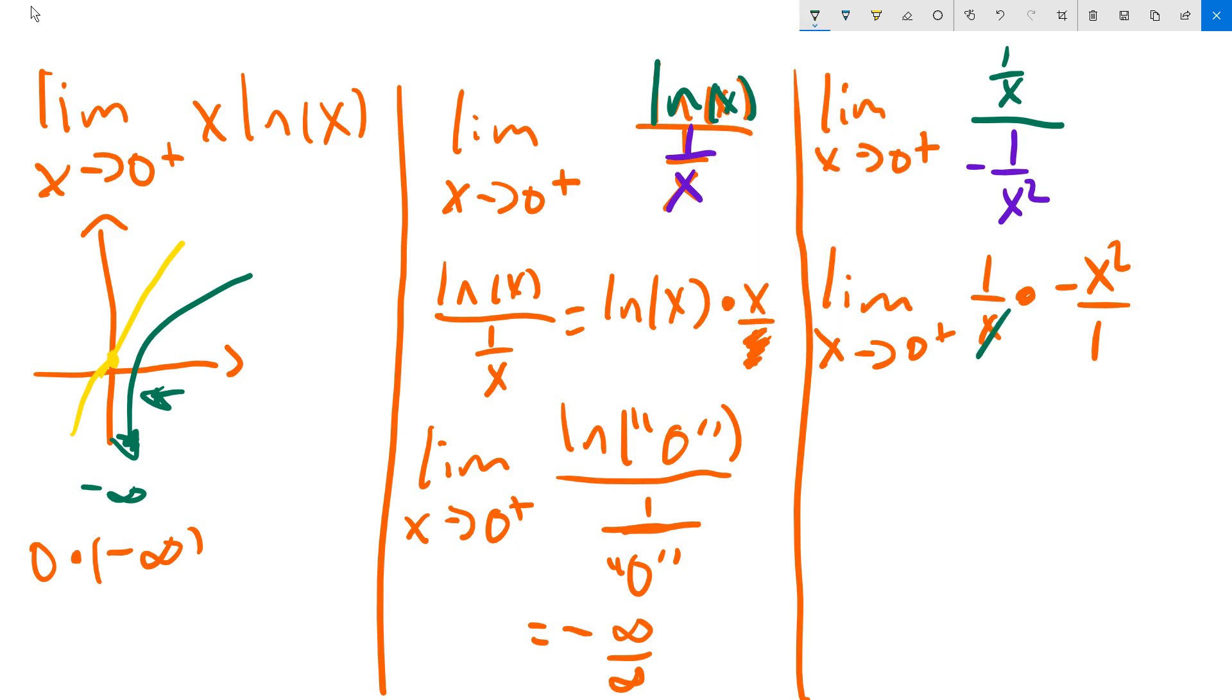And all that will really remain will be negative x. So let's do that as the next step right here. It becomes the limit as x approaches 0 from the right, it will be equal to negative x. And at this point, you can just plug 0 into this expression directly. And that's it.